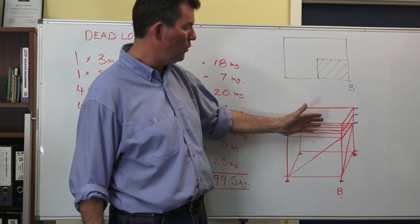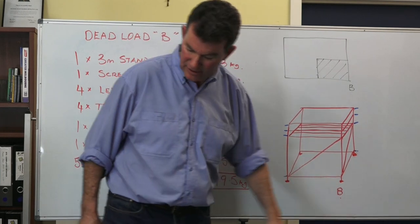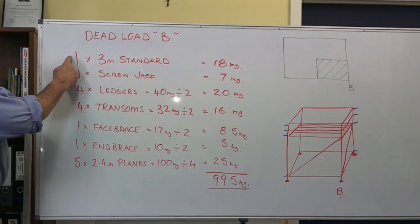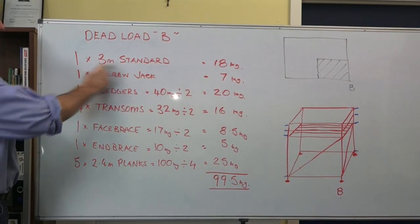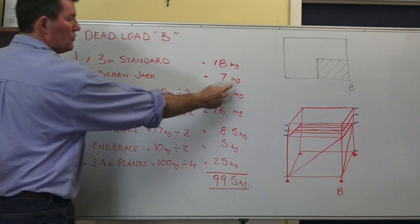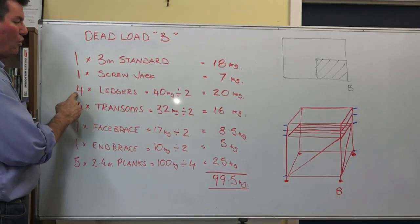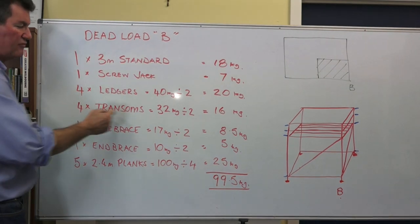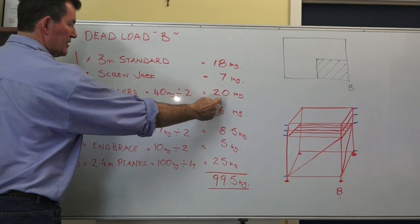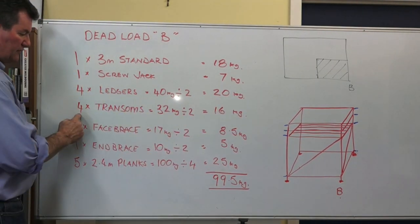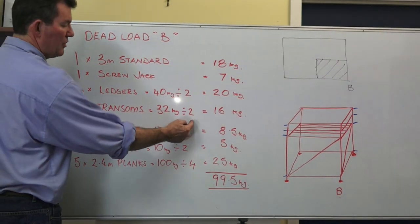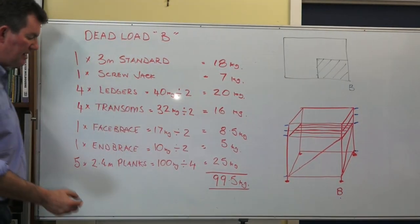To calculate how much of that weight is going down standard B, all we do is follow the rules. The full weight of the standard, so we've got 1 3 meter standard and that's 18 kilos. We write that down. 1 screw jack underneath that standard equals 7 kilos. We've got 4 ledges attached to that standard. 4 ledges is 40 kilos but we only want half the weight of the ledges. That gives us 20 kilos. There's 4 transoms attached to standard B. 4 transoms weighs 32 kilos but we only want half the weight, that gives us 16 kilos.